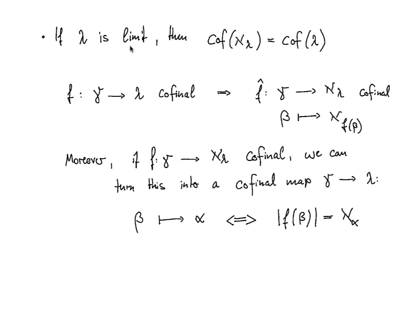In the case of limit cardinals, we observed that cf(ℵ_ω) = ω. Generally, cf(ℵ_λ) = cf(λ). One direction: if f: γ → λ is cofinal in λ, then the map β ↦ ℵ_{f(β)} is cofinal in ℵ_λ. For the other direction: if f: γ → ℵ_λ is cofinal in ℵ_λ, we convert it to a cofinal map into λ by sending β to α precisely when the cardinality of f(β) is ℵ_α.